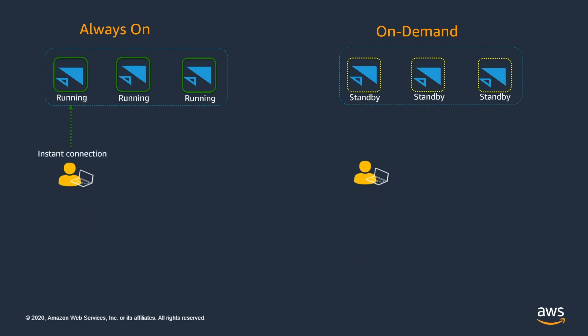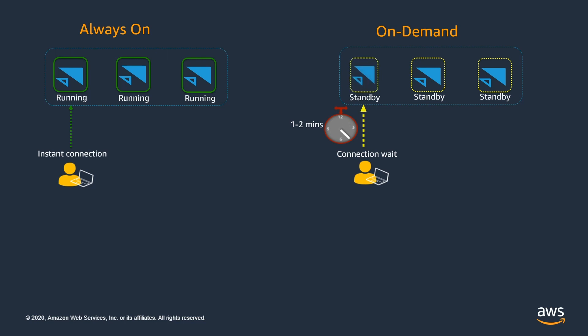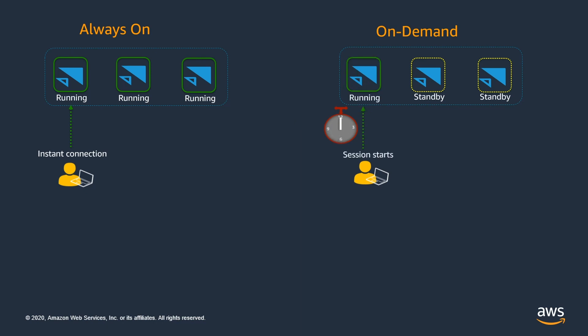The user who has initiated connection to always-on fleet will get instant connection to the streaming session. This is because the streaming instance is already up and running and gives an instant connection experience to the user. Whereas for the on-demand fleet, when the user initiates the connection, the standby instance starts up and will be prepared for the user session. This transition from standby state to running state can take anywhere between one to two minutes, so the user will have to wait one to two minutes to get hold of the connection to the streaming instance. Once the standby instance transitions to the running state, the user can start the streaming session.